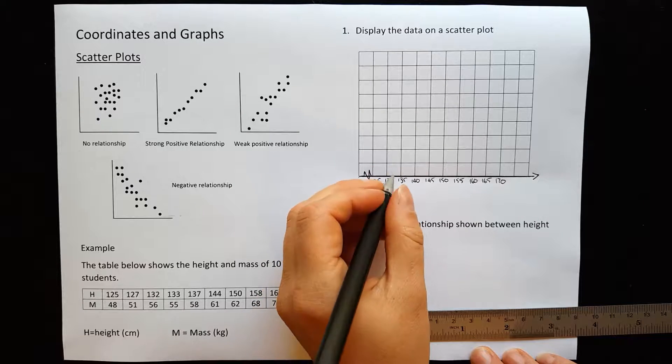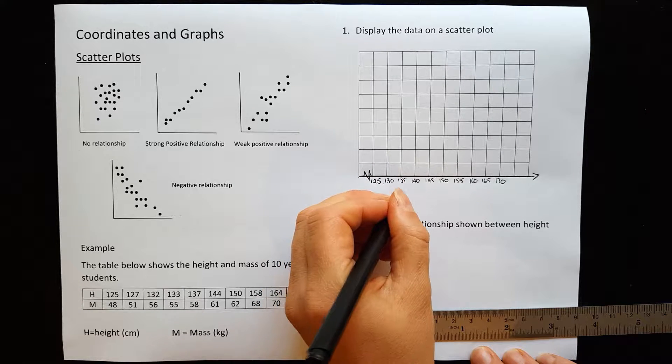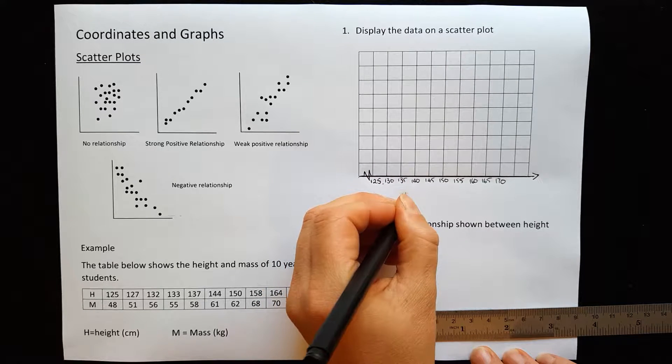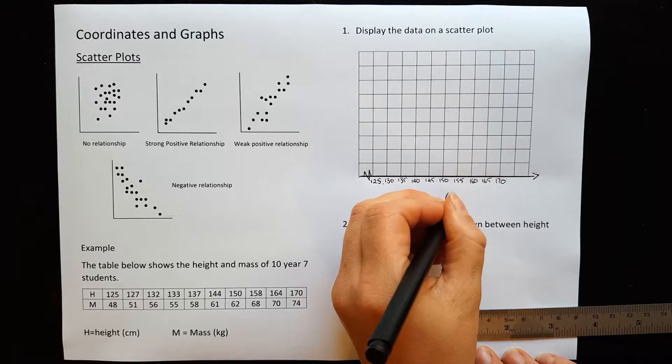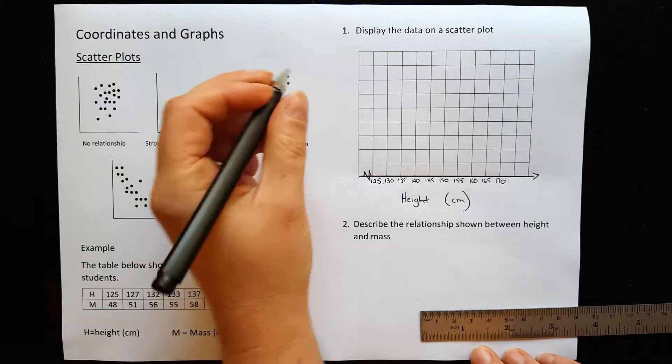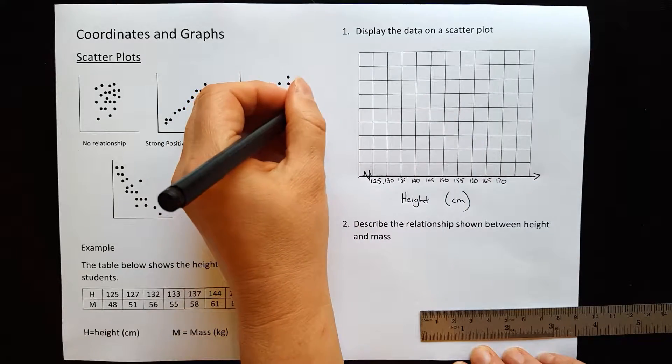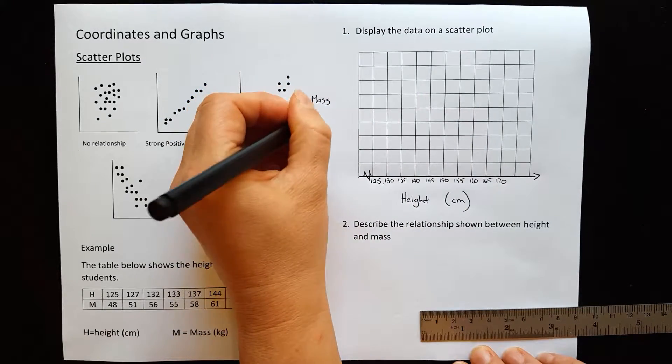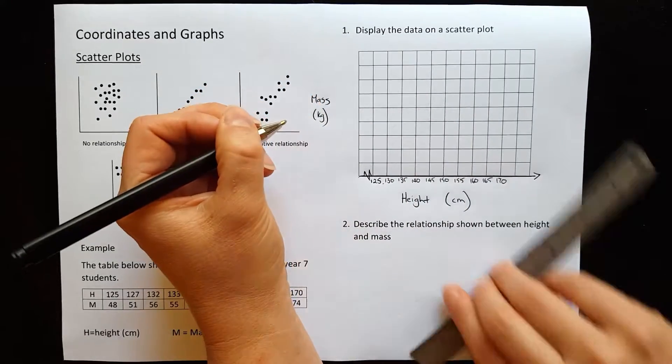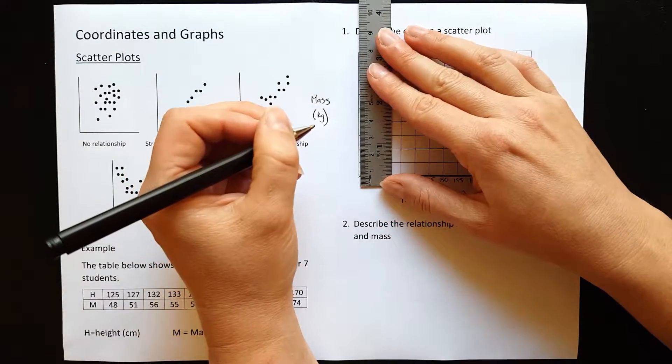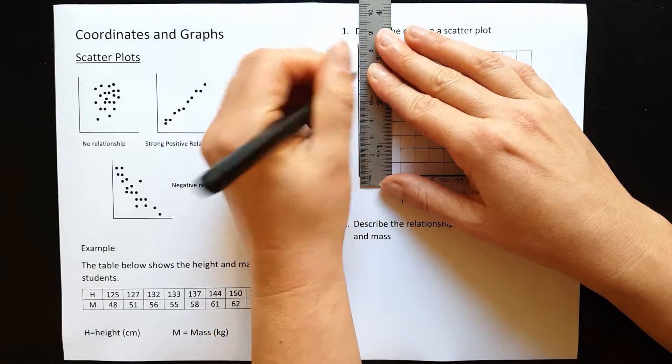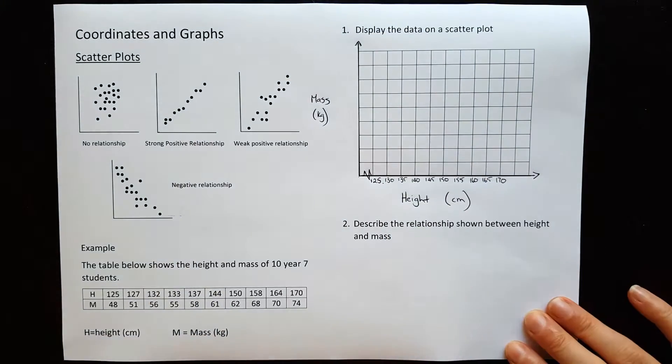And we need to label our axes, so we're going to put height down here measured in centimeters. The vertical axis is going to be the mass in kilograms. So now we're going to draw our vertical line and we need to work out what scale we can use for that.